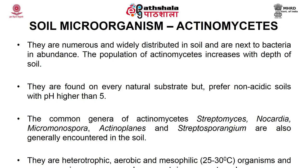Now let's study these microorganisms one by one. First: actinomycetes. Actinomycetes are numerous and widely distributed in the soil and are next to bacteria in abundance. The common genera include Streptomycetes, which corresponds to roughly 70% of the total actinomycete population in the soil. Nocardia, Micromonospora, and Streptosporangium are also generally encountered. These actinomycetes are widely distributed in soil as well as in compost, and their population increases with depth. They prefer non-acidic soils with a pH higher than 5.